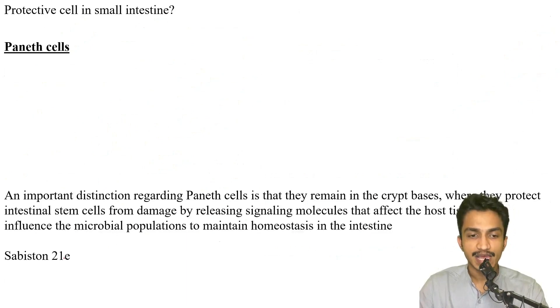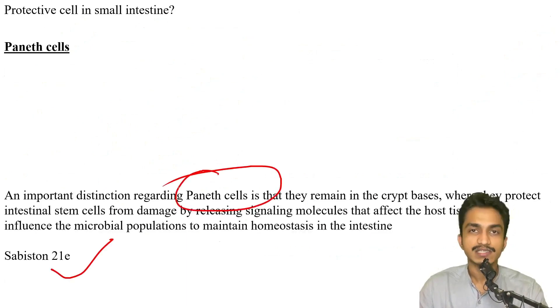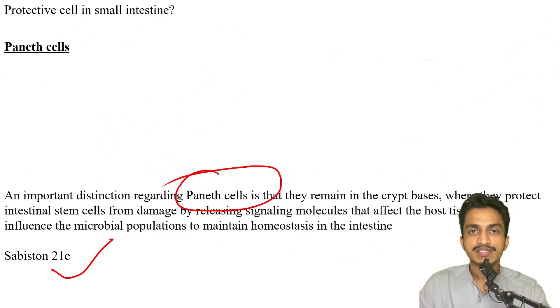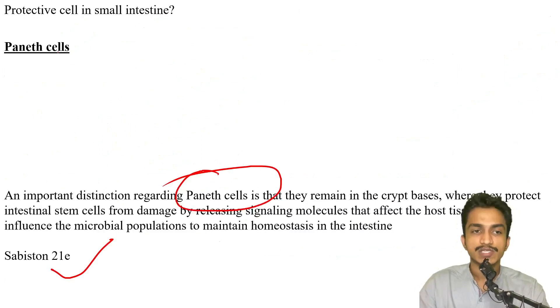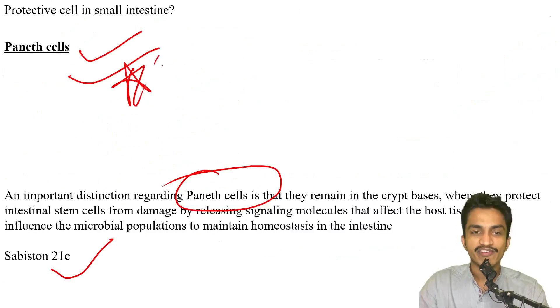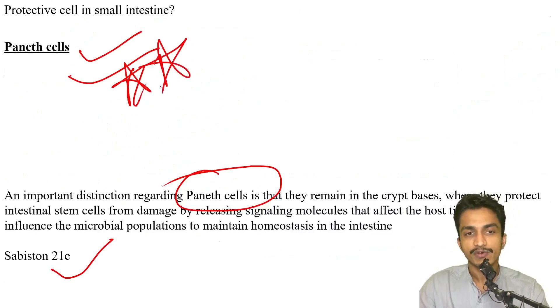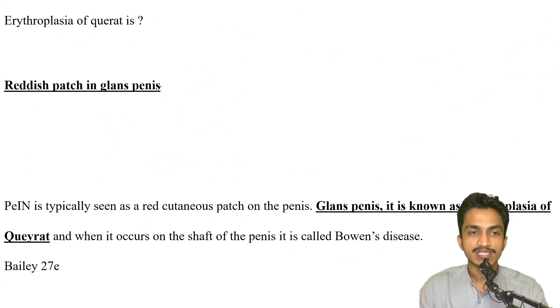Protective cell in the small intestine — physiology from Sabiston: only one cell type, Paneth cells, located at the crypt base. They protect stem cells from damage. Answer: Paneth cells. Very easy and straightforward.